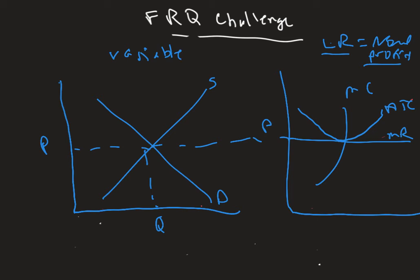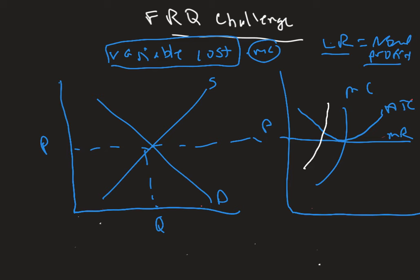If it's a fixed cost issue — a lump sum subsidy or lump sum tax — those do not affect the MC curve at all. For example, an increase in minimum wage would cause an increase in marginal cost and also an increase in ATC. When that happens, two things occur.